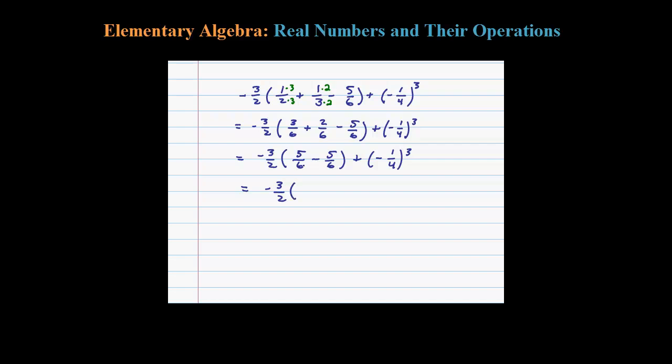All right, so to finish this off we have negative 3/2 times 0 plus negative 1/4 cubed. Well certainly anything times 0 is 0, so negative 3/2 times 0 is 0. Now we have to figure out what negative 1/4 cubed is.